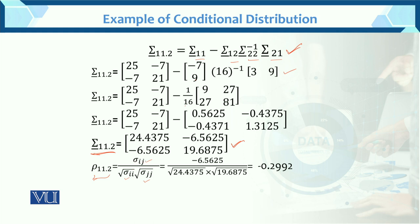Now, sigma ij covariance. This is the covariance. Sigma ij minus 6.5625. And the diagonal terms are the variances. So, sigma ii means first, 24.4375 square root and sigma jj means the second, 19.68 square root. Multiply these values, then divided by minus 6.56 divided by this factor,